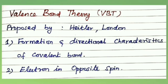Valence bond theory was proposed by Heitler and London. The concept of covalent bond is based on the sharing of electrons between the atoms. Atomic orbitals of the valence shell of the atom overlap together. Valence bond theory explains the formation and directional characteristics of covalent bond.